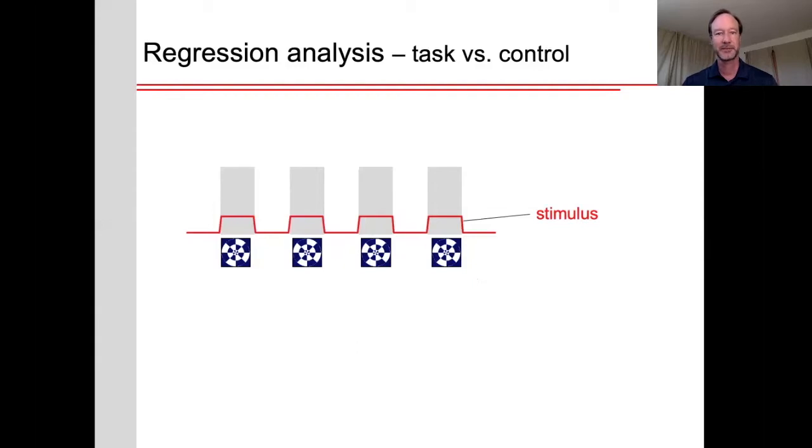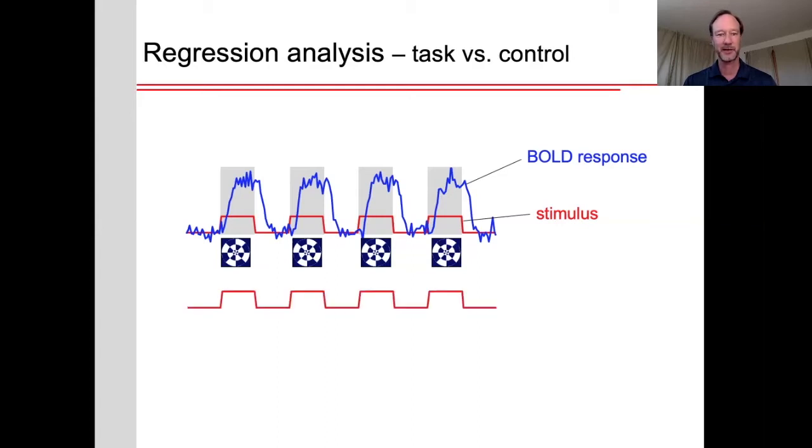So let's consider simple regression analysis of just a task versus a control state. And let's say we have these periods when we're showing a flashing checkerboard to an individual, and this is what the BOLD response would look like. So how do we best model this response? Well, the simplest would be, let's just model it as looking at the average of the signal when the stimulus was on compared to the average of the signal when the signal was not on. This is the same as saying this is the ideal model response, and we're going to fit that to the data. And as you can see, this doesn't fit really well.